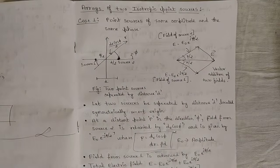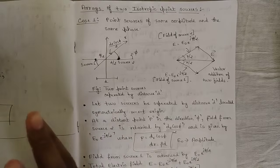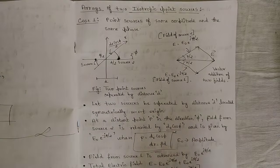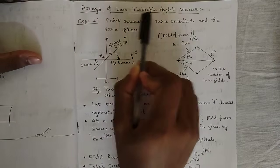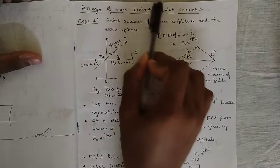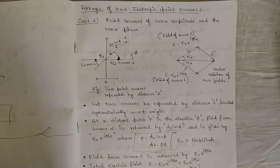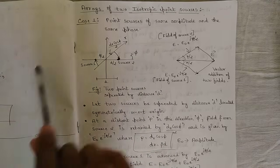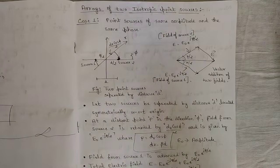Now we are going to study point sources, but specifically what happens when we take two point sources at the same time — what would be the impact on the electric field or any field. The concept is 'arrays of two isotropic point sources.' Since the word isotropic is mentioned, it is clear that whatever antenna or dipole we are using is isotropic in nature. Under this we have two cases; we'll draw the antenna pattern for the first case in this video.